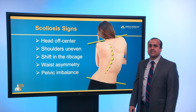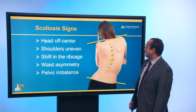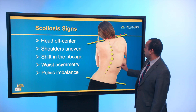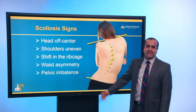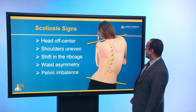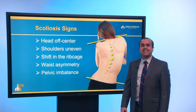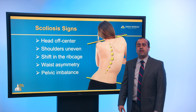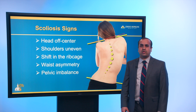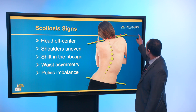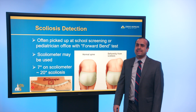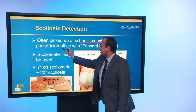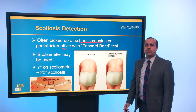How does scoliosis present? In terms of signs, we frequently see that the head is off-center, the shoulders are uneven — as in our case, the right shoulder was higher than the left — there's a significant shift of the ribcage, asymmetry of the waist, and pelvic imbalance, which has implications for low back pain and hip pain. Scoliosis is often picked up at school screening or at the pediatrician's office with a forward bend test.